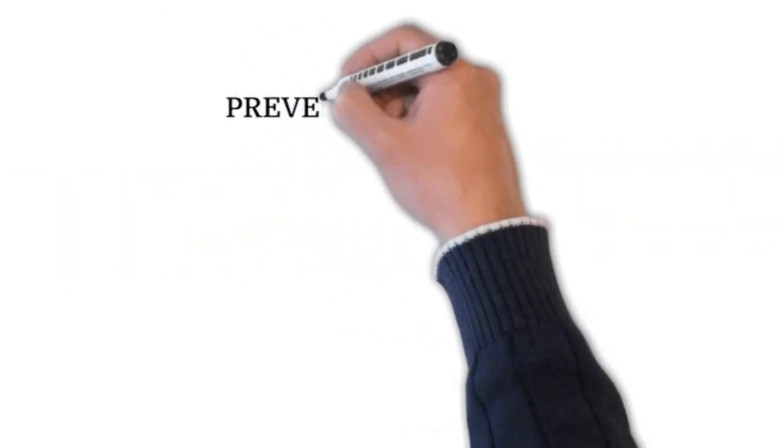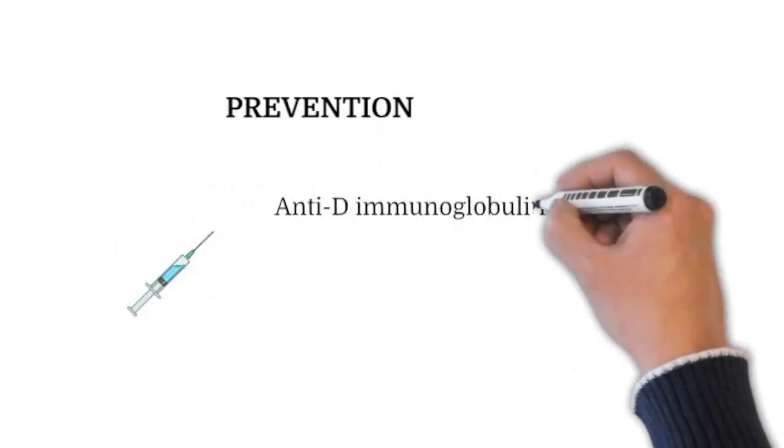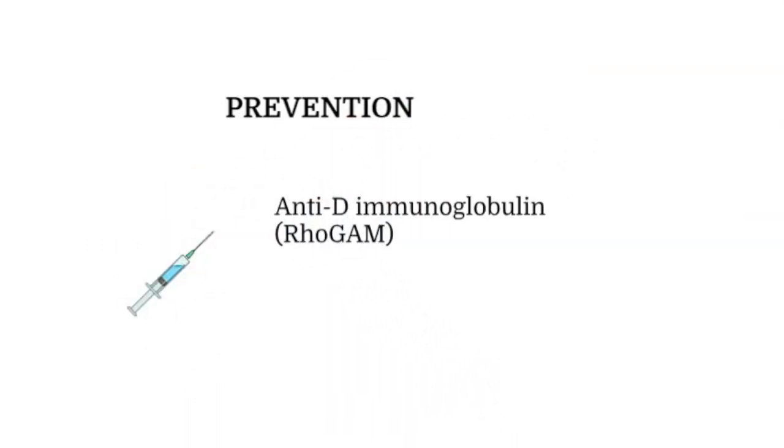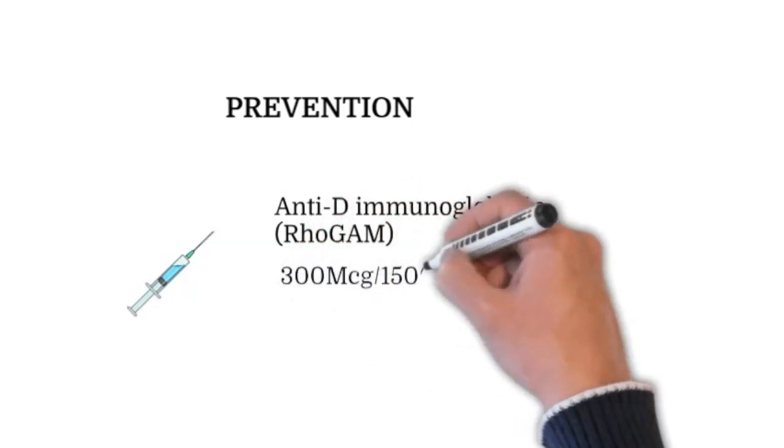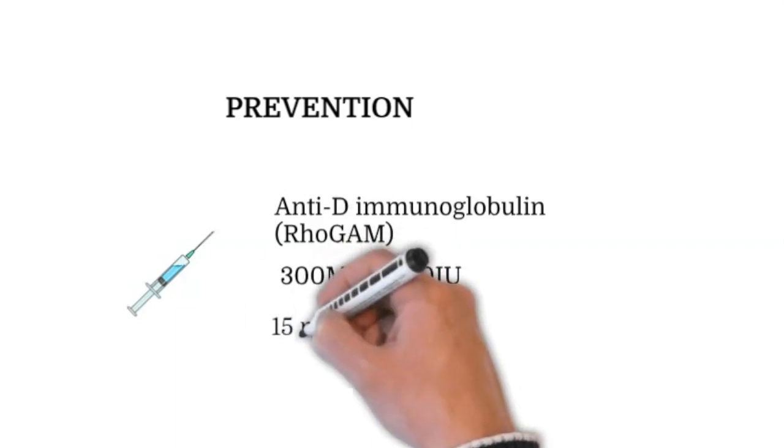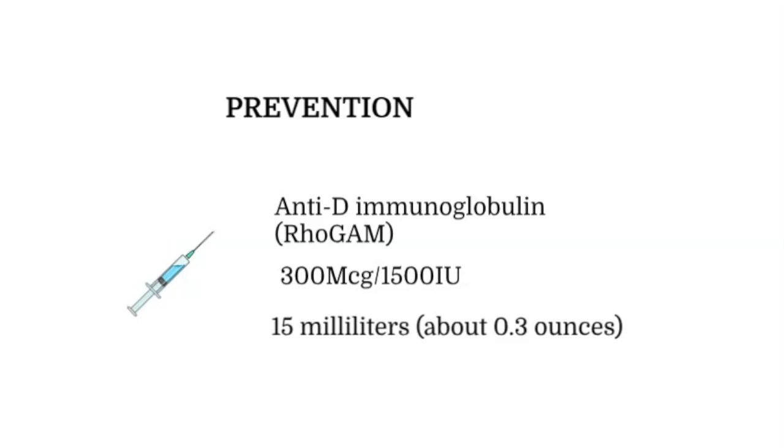Luckily, we have a way to prevent that from happening. It's an injection called anti-D immunoglobulin, commonly known as RhoGAM. The standard dose is 300 micrograms or 1500 international units. And that's enough to cover about 15 milliliters of fetal blood cells that might enter the maternal circulation.